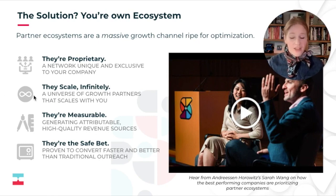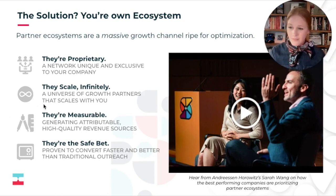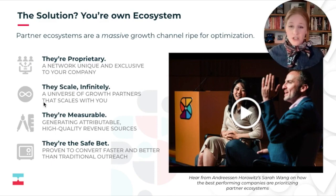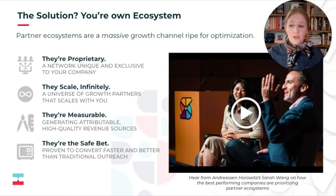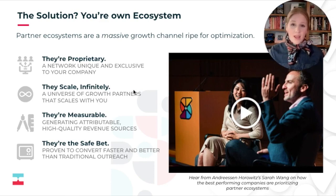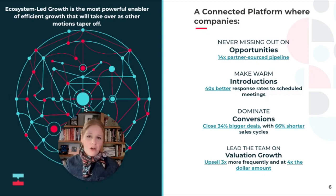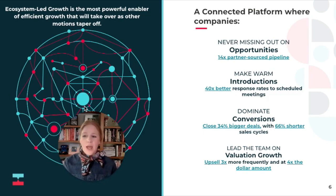Partner ecosystems are a massive growth channel ripe for disruption and optimization. They are proprietary — unique and exclusive to your company. They scale infinitely as you connect with partners and your partners connect with partners. They are measurable, offering attributable high-quality revenue from partners, whether influenced or direct. And they are the safer bet — partner-sourced and influenced revenue is proven to convert faster and better than traditional outreach. At Crossbeam, we truly believe ecosystem-led growth is the most powerful enabler of efficient growth.